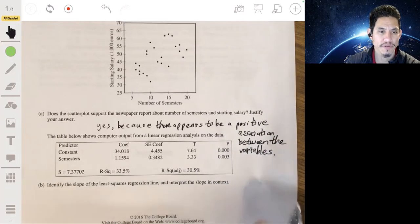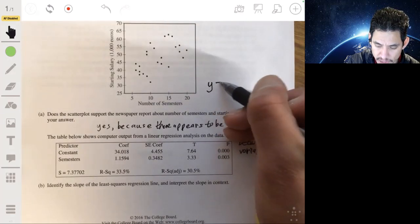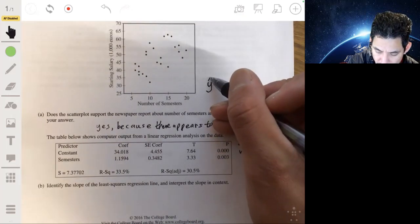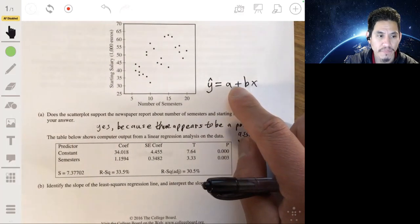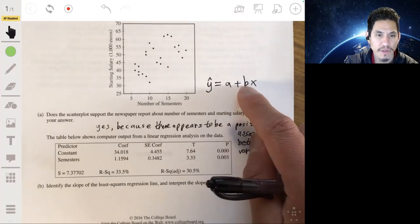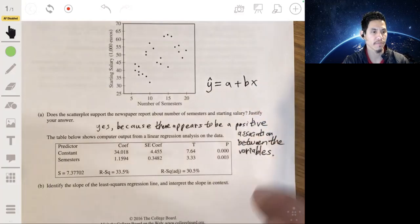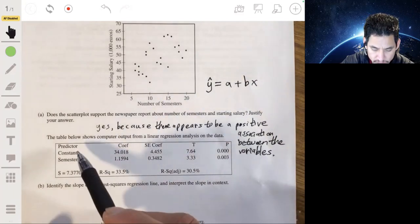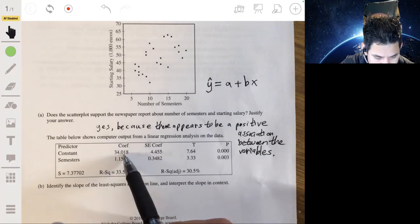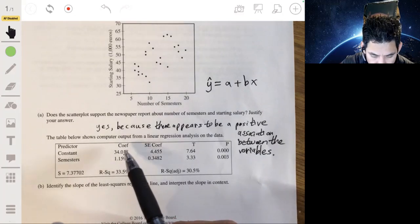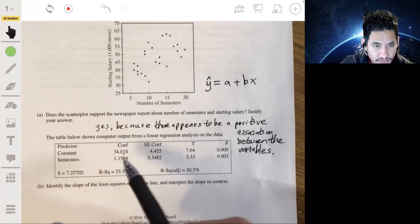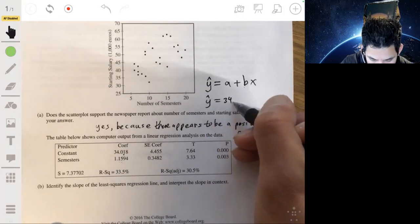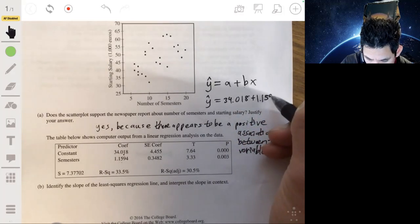This table shows the computer output from a linear regression analysis on the data. So we want to identify the slope of the least squares regression line and interpret the slope in context. Okay. So essentially this is the form, bringing to the Y equals MX plus B. But in a stats class, usually Y equals A plus BX. Or more specifically, Y hat. The predicted Y value is equal to the Y intercept plus the slope B times X or the explanatory variable.